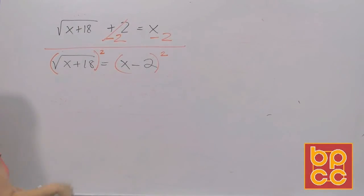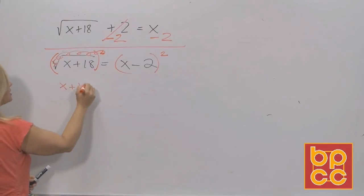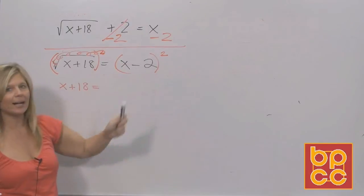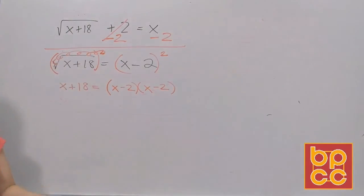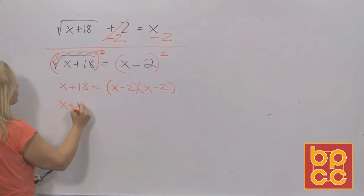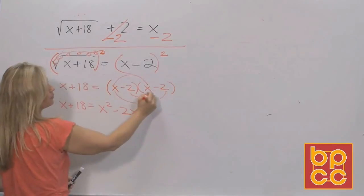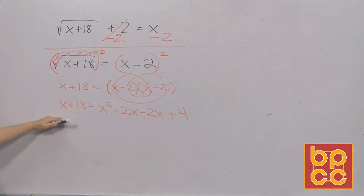Squares and square roots are inverse operations — they cancel out, leaving x plus 18. Now x minus 2 squared means you write it twice and FOIL. First: x squared. Outer: negative 2x. Inner: negative 2x. Last: positive 4. Do you see a square root symbol now? No — it's no longer radical. You've made it into another equation you already know, and it has an x squared, so this is a quadratic.